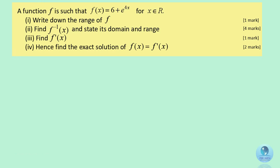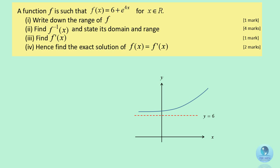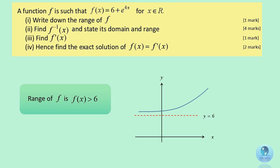To find the range for function f, sketch the graph for 6 plus e to the power of 4x. As it is an exponential graph, there is an asymptote at y equals 6. So the range for f(x) is greater than 6.